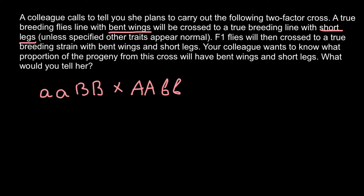By the way, we call these pure lines — lines of animals or plants that when crossed with themselves always produce the same trait. For example, if flowers are white, following generations will always be white. Similarly, if we cross this pure line among themselves, wings will always be bent, and if we cross the other line among themselves, legs will always be short.